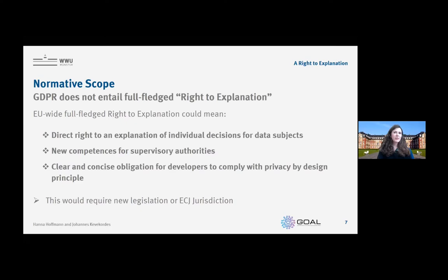Before talking about the conflicts of the right, we want to look at the normative scope — what it could mean. Since there is no full-fledged right to explanation right now, there are different possibilities: first, a direct right to explanation of the individual decision for the data subject; second, new competences for the supervisory authorities; and third, more clear and concise obligations for developers to comply with privacy by design principles. All three possibilities would need new legislation or at least new jurisdiction from the European Court of Justice.